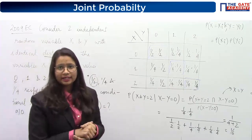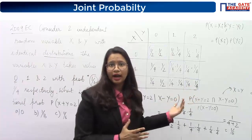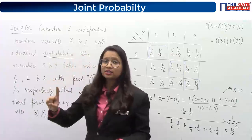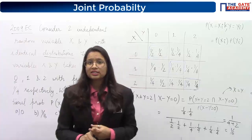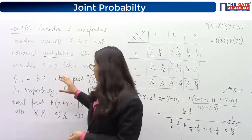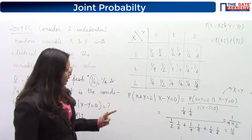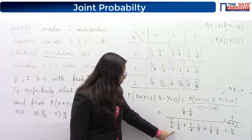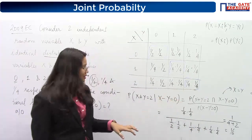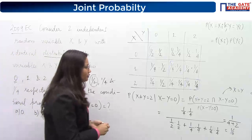Solving the conditional probability: numerator is 1/16, denominator is 1/4 + 1/16 + 1/16. Taking LCM of 16, the denominator becomes 4/16 + 1/16 + 1/16 = 6/16. So the answer is (1/16) ÷ (6/16) = 1/6. The answer is 1/6. This is how you solve a joint probability question for discrete random variables using this table approach.